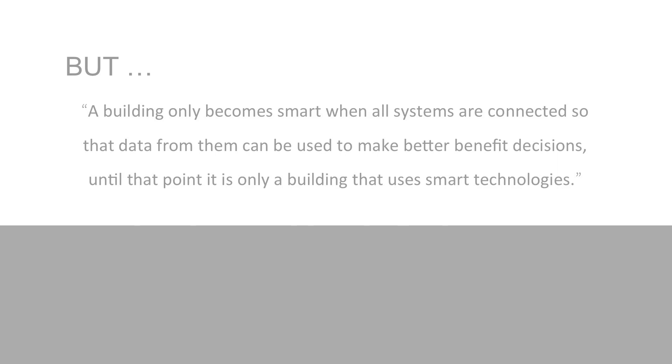A building only becomes smart when all systems are connected so that the data from them can be used to make better benefit decisions. Until that point, it's only a building that uses smart technology. That's quite important, because with the definitions I'd seen, you could quite easily lump so many buildings as being a smart building just because they bought one or two different systems. Equally, you could have a smart city, and many of the smart cities I've seen around the world are not really smart cities — they are smart infrastructure projects. Look at London: London's been called a smart city, but in reality what we've got is London Transport, which is very, very smart — that's the infrastructure — and everything else about it is not necessarily smart.